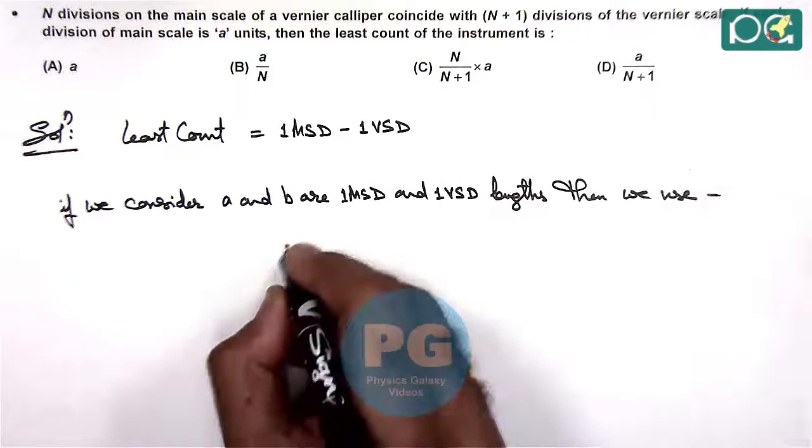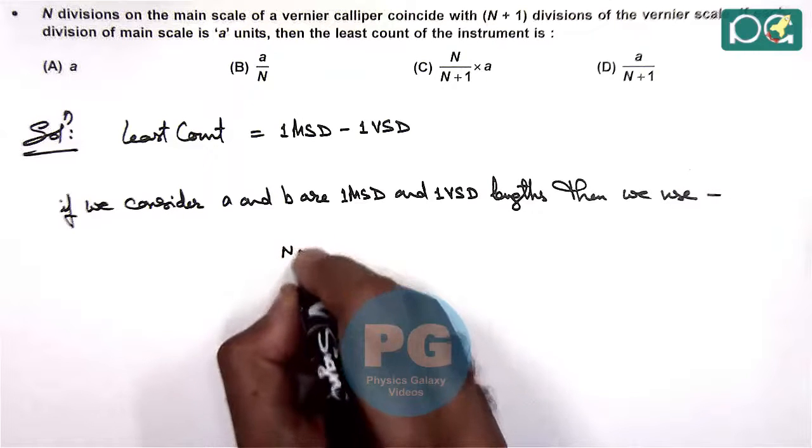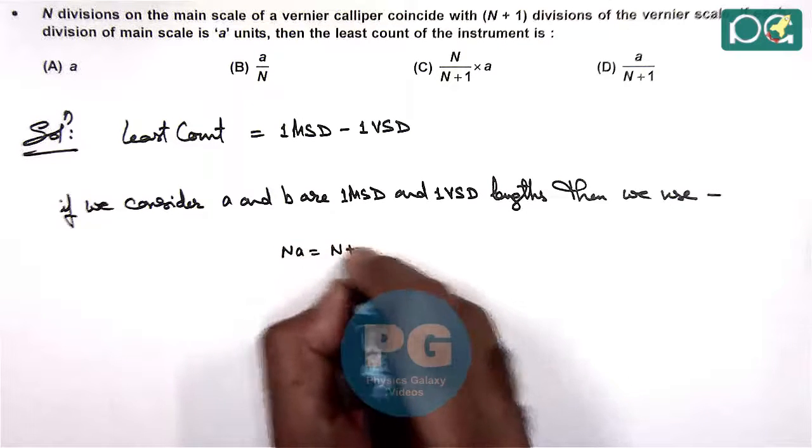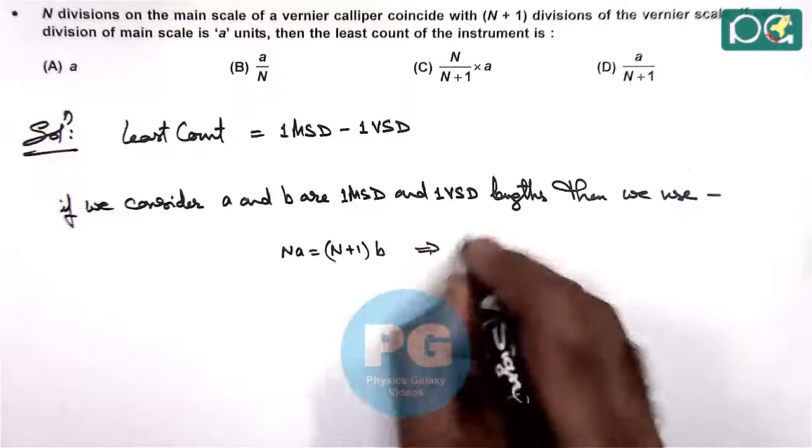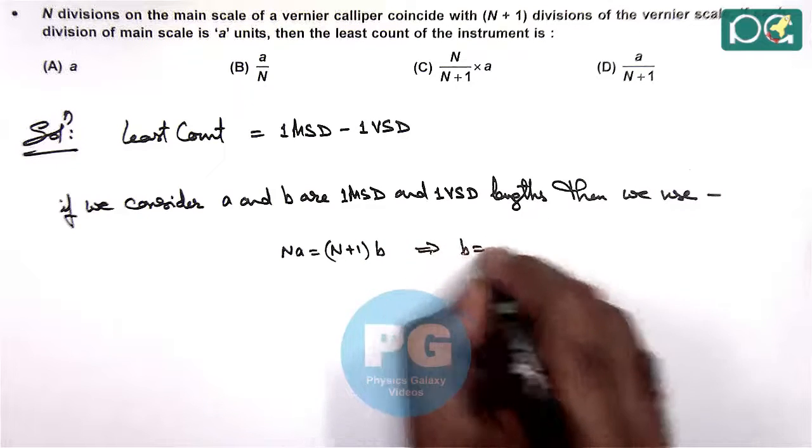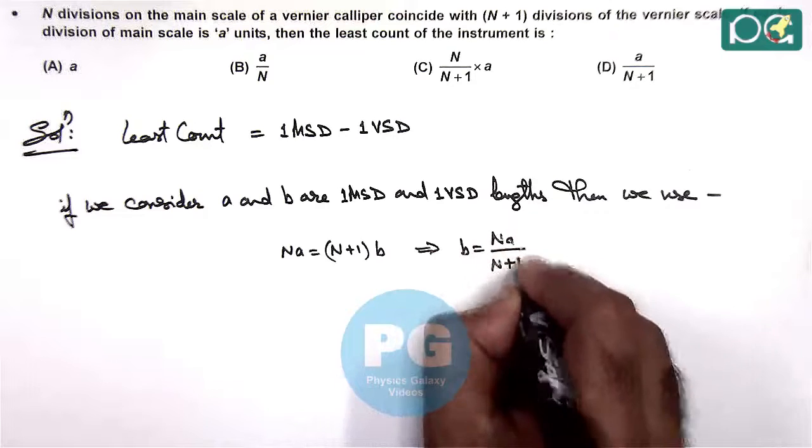So here we can use nA should be equal to n plus 1 times B, which is giving us the length of vernier scale division which is nA by n plus 1.